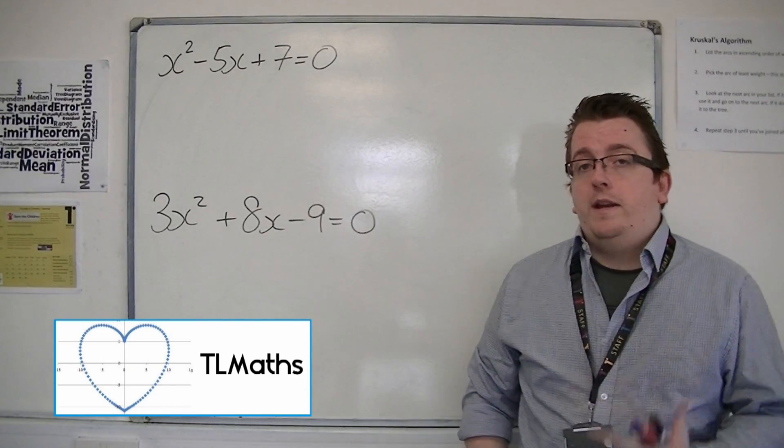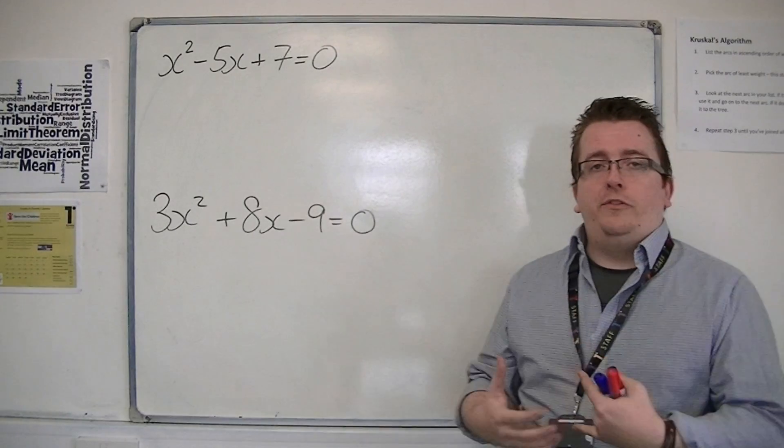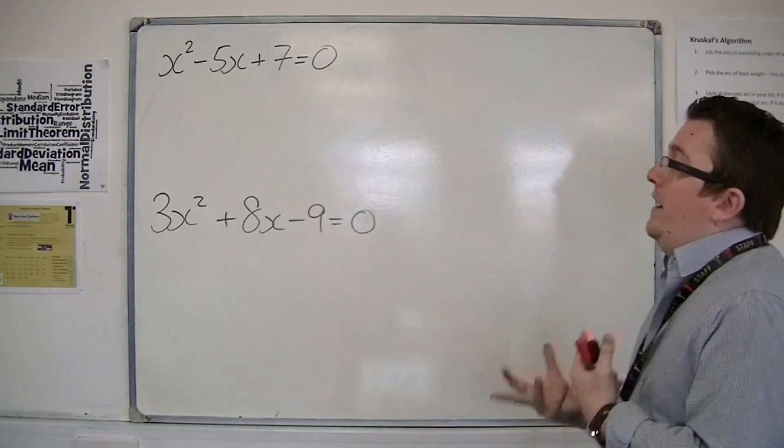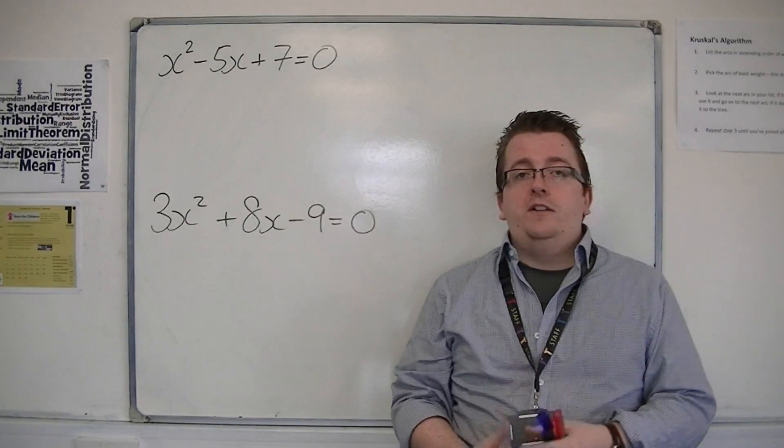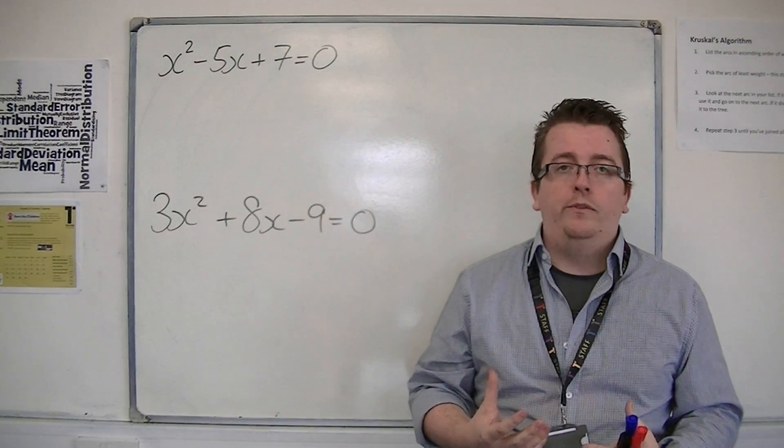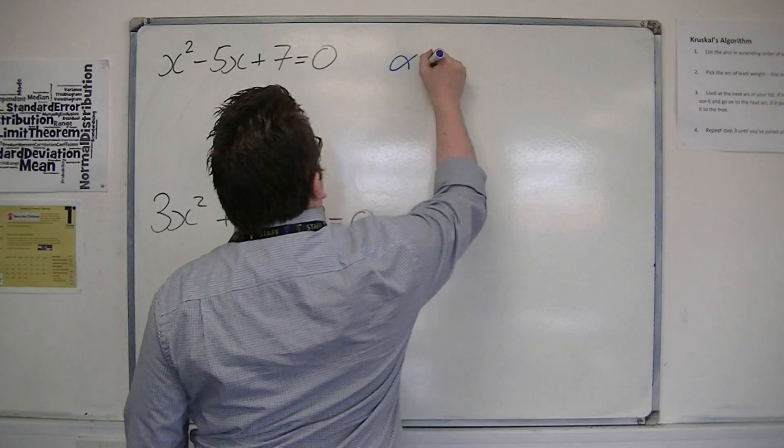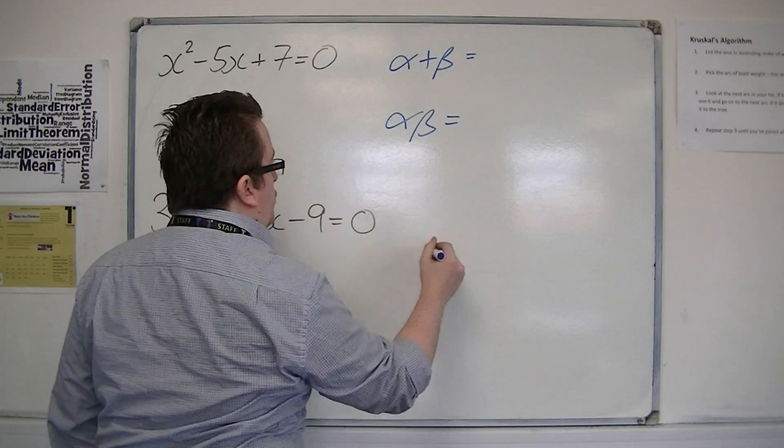In the previous video I introduced how we're going to be working with the roots of quadratic equations. I introduced alpha and beta. For both of these equations I want to find the sum of the roots and the product of the roots. So I want to find alpha plus beta and alpha beta for each of these examples.